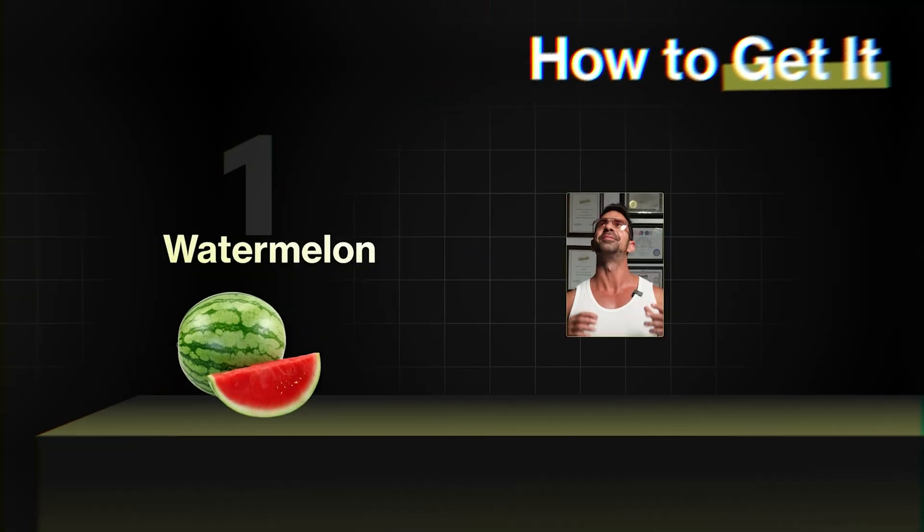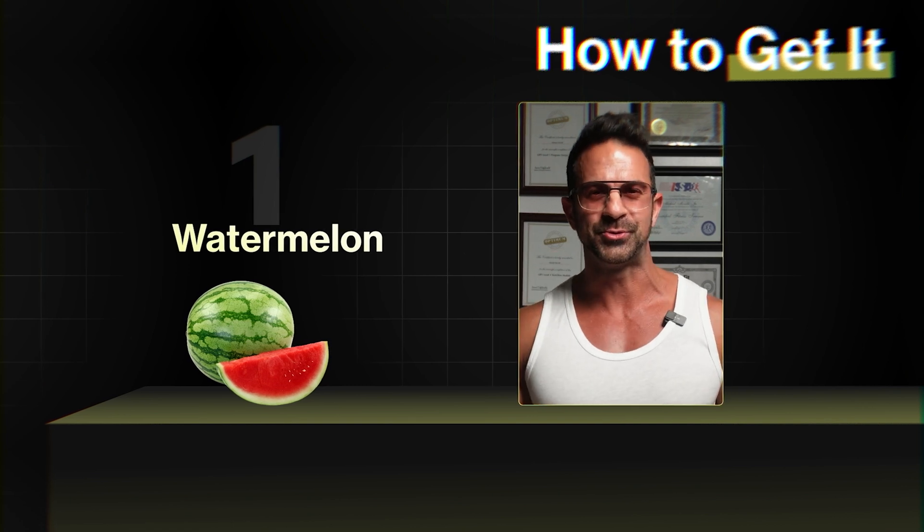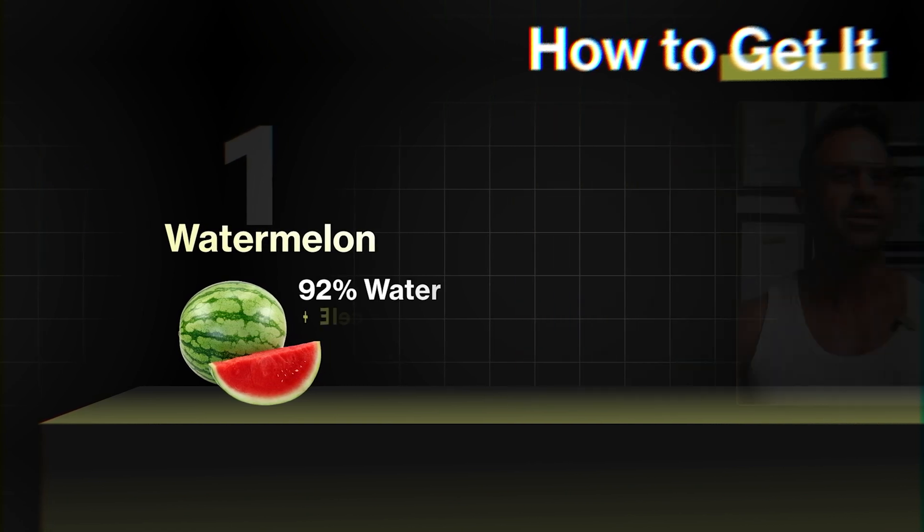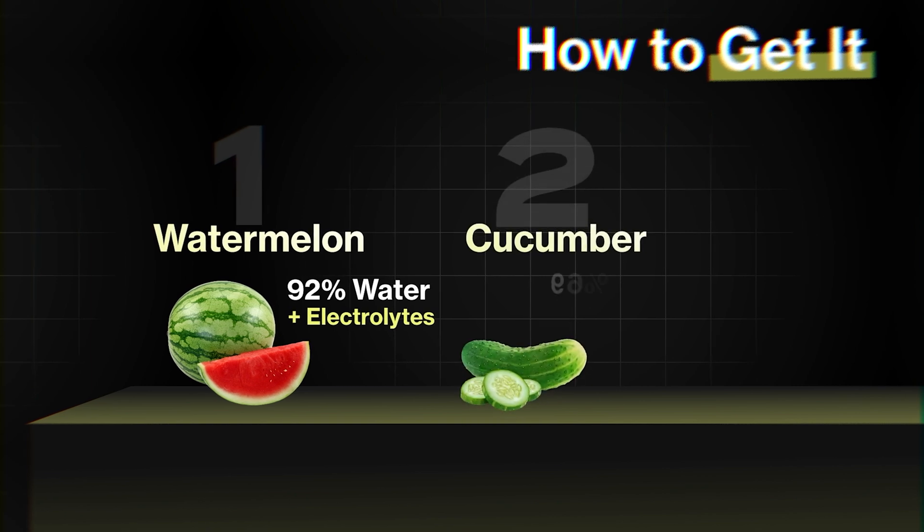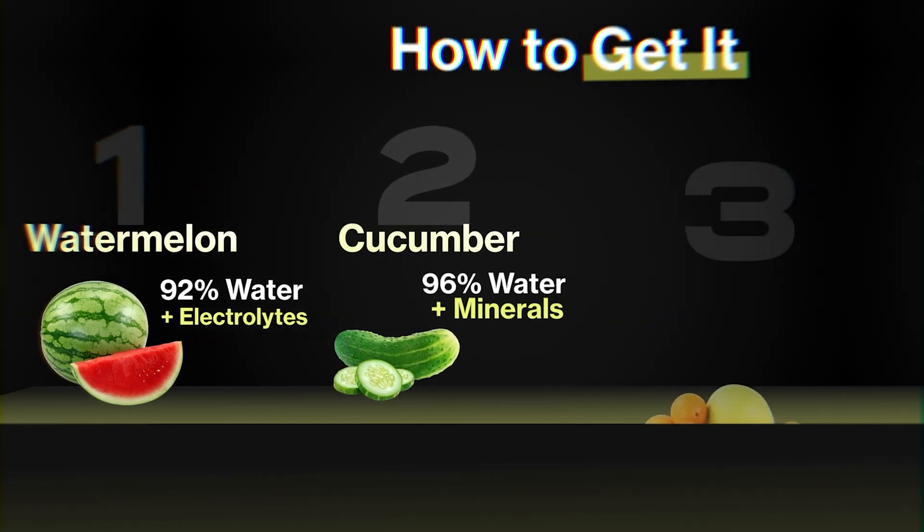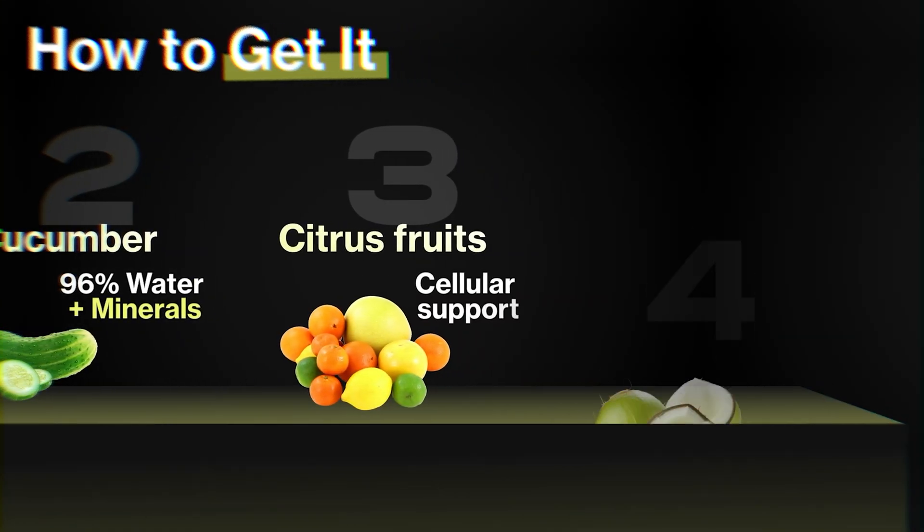How to get it? Watermelon. I love watermelon, and I'm sure you do too. Everybody loves watermelon. 92% water plus electrolytes. Cucumber, 96% water plus minerals. Citrus fruits, cellular support. Coconut, natural electrolytes. Got the point?